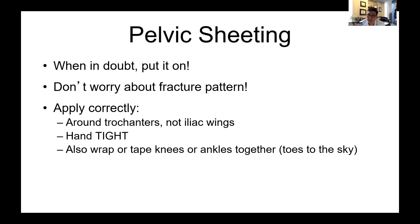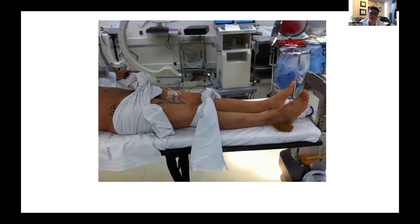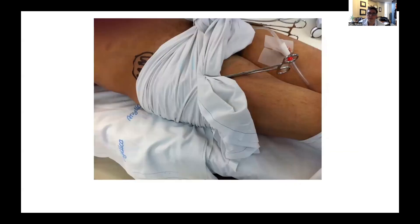Pelvic sheets are easy to put on and can be life-saving. When in doubt, put it on — don't worry too much about the fracture pattern, because if you apply a sheet, it can help stabilize things no matter what it is. Sheets don't really help too much for lateral compression injuries, but they're still useful. The key to sheeting is to place the sheet low around the trochanters — it needs to be low over the trochanters and really tight, as tight as you can do by hand. Wrapping the knees and toes is also useful to bring the pelvis together.